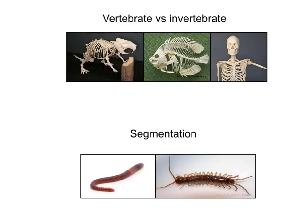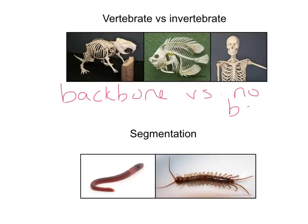We're going to start our discussion of kingdoms, but first we need to know some basic terms. Let's start with vertebrate versus invertebrate — vertebrate means having a backbone, invertebrate means no backbone. All the examples in the upper picture would be vertebrates; the ones below would be invertebrates.